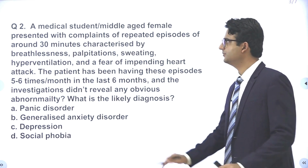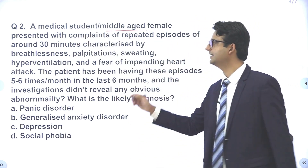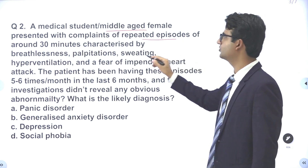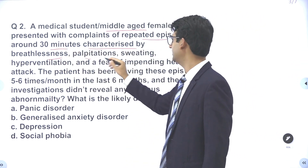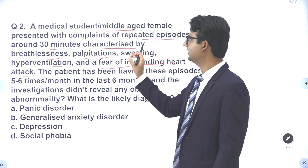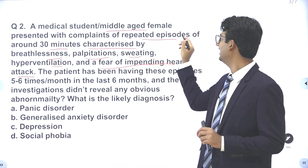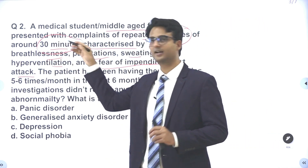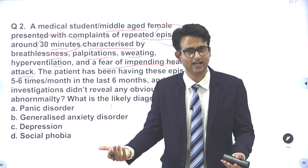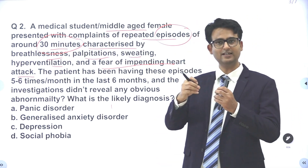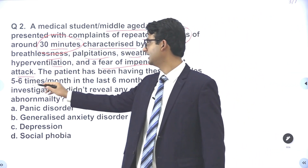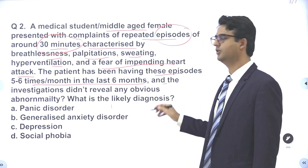Alright, second question. Some students said the question referred to a medical student, some said a middle-aged female — either way it does not really make any difference. A middle-aged female presented with complaints of repeated episodes of around 30 minutes, characterized by breathlessness, palpitations, sweating, hyperventilation, and a fear of impending heart attack. When you read these five symptoms and are told it was an episode of around 30 minutes — repeated episodes of increased anxiety — these are episodes of panic attacks. She has been having these panic attacks five to six times a month in the last six months, and investigation did not reveal any obvious abnormality.